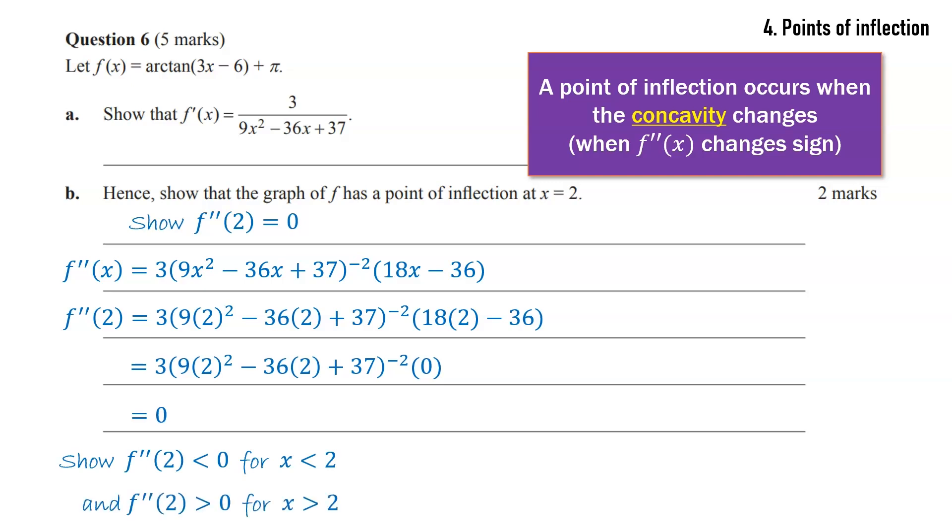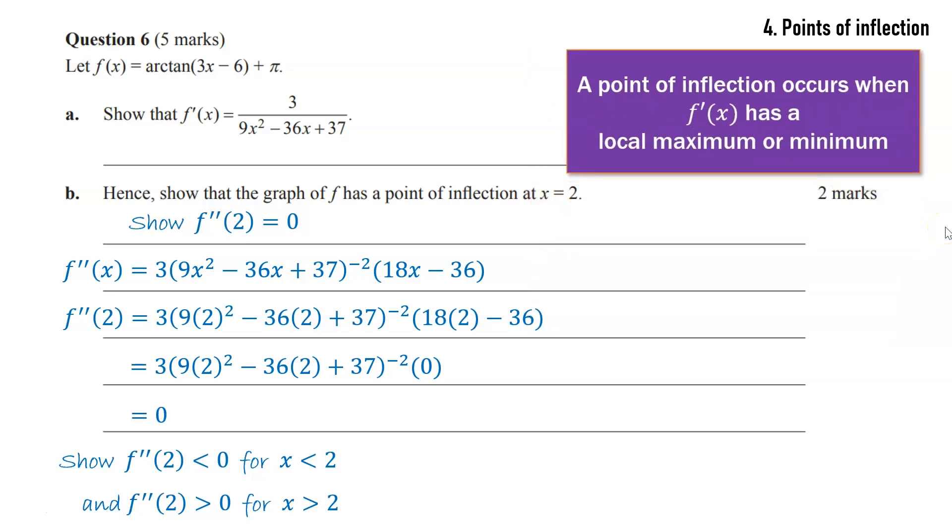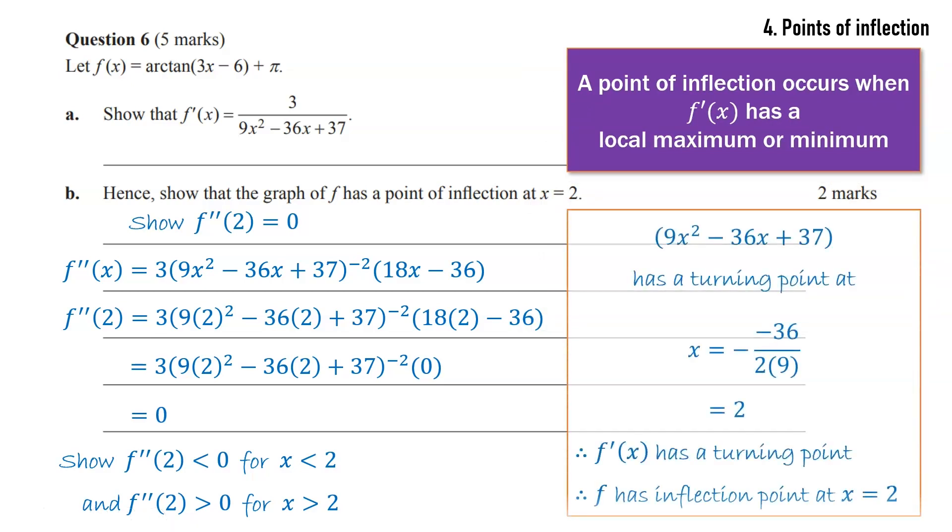Another way you could have done it, because an equivalent definition for a point of inflection is where the first derivative has a local maximum or minimum. It's a point of maximum or minimum gradient. So in this example, we've got a parabola on the denominator there of the first derivative, and that parabola is going to have a turning point at x equals 2. So by showing that, then the reciprocal would also have a turning point and therefore f would have a point of inflection. That concept has come up a few times, so watch out for it. I've got another video on points of inflection if you're interested.